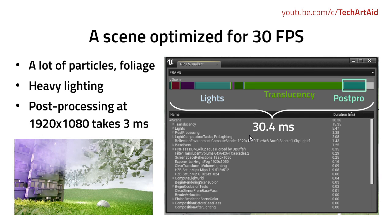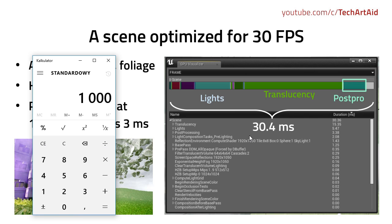Another example: this is a scene optimized for 30 FPS. If we want 30 frames per second, and we have 1000 milliseconds in a second, then by doing the simple calculation — 1000 divided by our desired FPS, which is 30 — we can see it leaves us with 33 milliseconds to render a frame. If we exceed this number when doing calculations on the GPU or CPU, we won't hit the target of 30 frames per second.